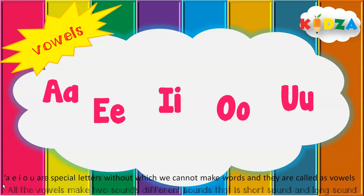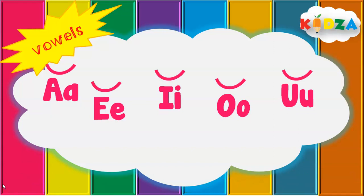All the vowels make two different sounds: a short sound and a long sound. Let's understand the short and long sound with words and pictures. The short vowel sound is denoted with a curved line. Now let's see the short sound of these vowels.